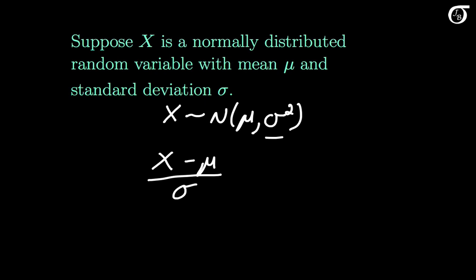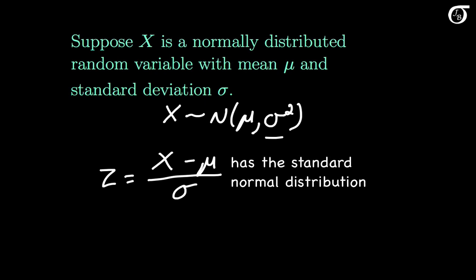I'm going to call this quantity Z. Here Z is a random variable that has the standard normal distribution. We could write this as Z is distributed normally with a mean of 0 and a variance of 1. Note that by subtracting the mean and dividing by the standard deviation, we are forcing the random variable to have a mean of 0 and a standard deviation of 1.